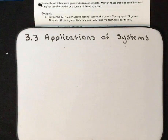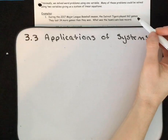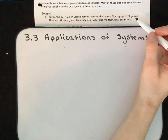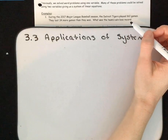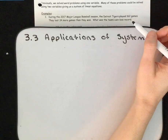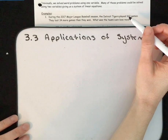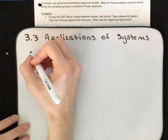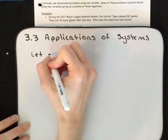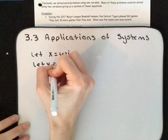Using systems of equations to solve applications. For our first example, during the 2017 Major League Baseball season the Detroit Tigers played 162 games. They lost 34 more games than they won. What is the win-loss record? When solving a systems of equations application problem, the first thing we want to do is identify what the variables are going to be. So let X equal the wins and let Y equal the losses.